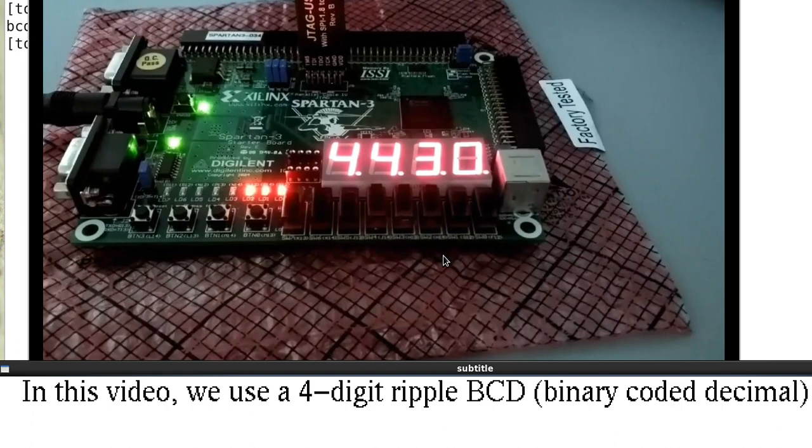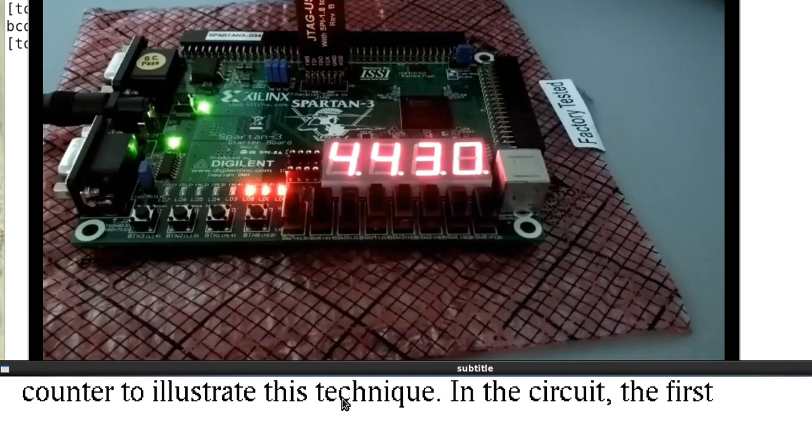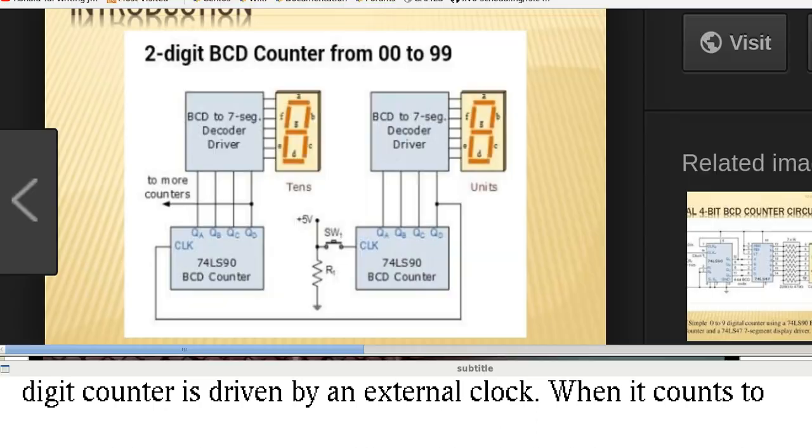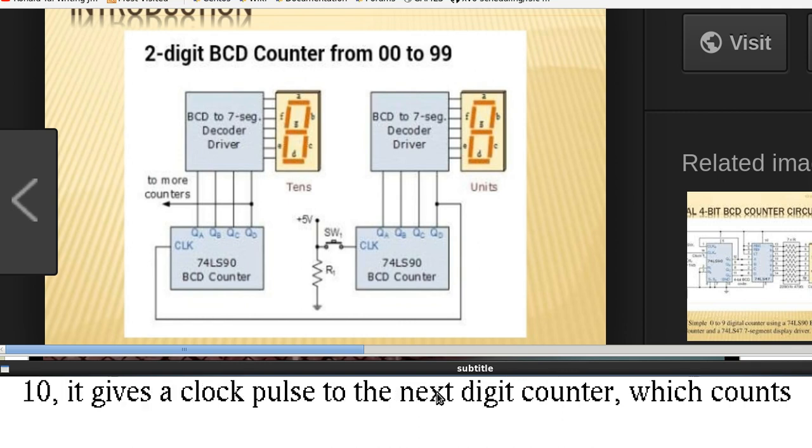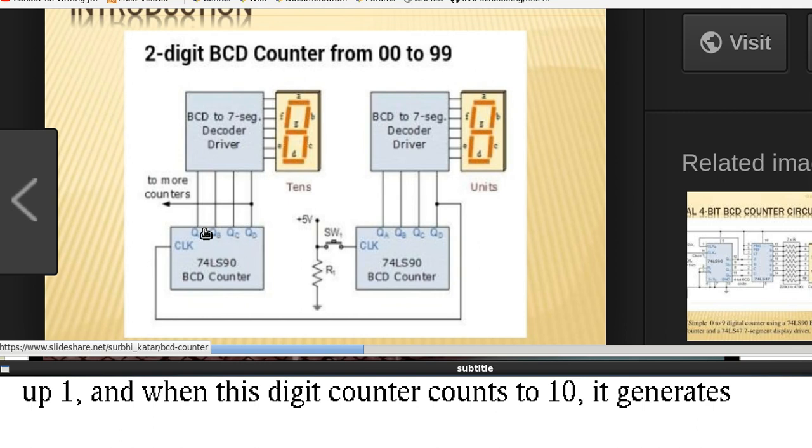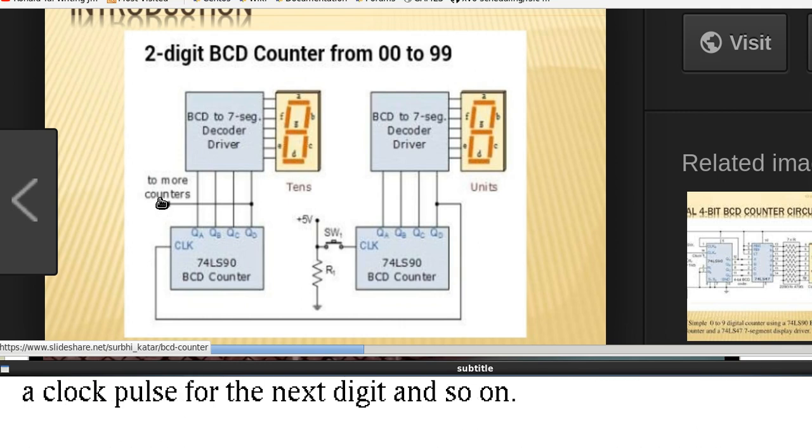In this video, we use a four digit ripple BCD binary coded decimal counter to illustrate this technique. In the circuit, the first digit is driven by an external clock. When this clock counts to ten, it will generate a clock pulse and the next counter will count one. When this digit counts to ten, it generates another pulse which will drive another digit and so on.